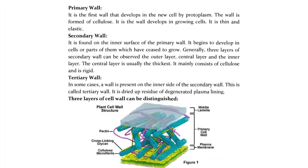The primary wall is the first wall that develops in the new cell by the protoplasm. The wall is formed of cellulose and develops in growing cells. It is thin and elastic.